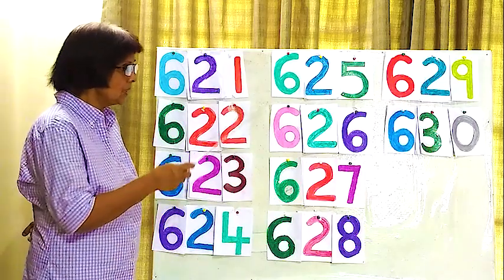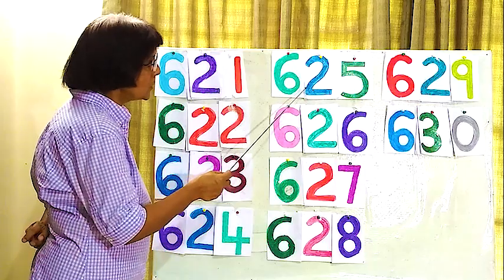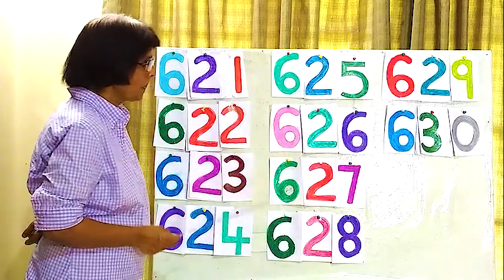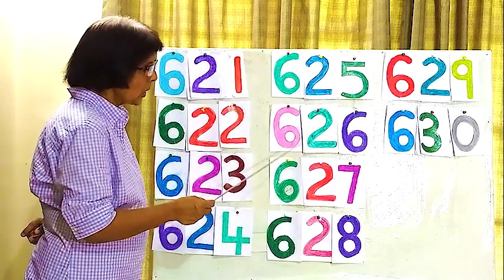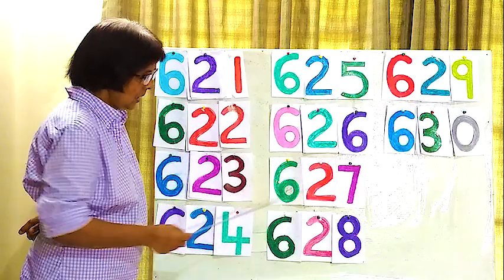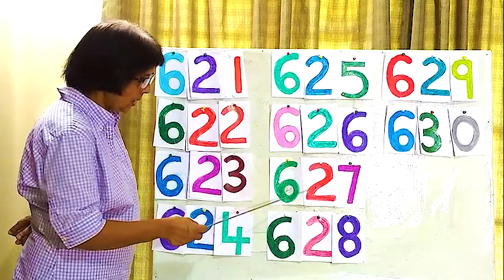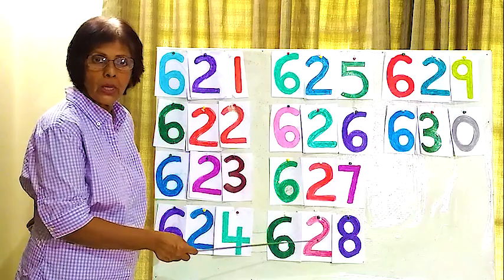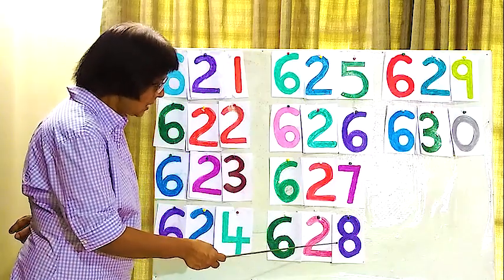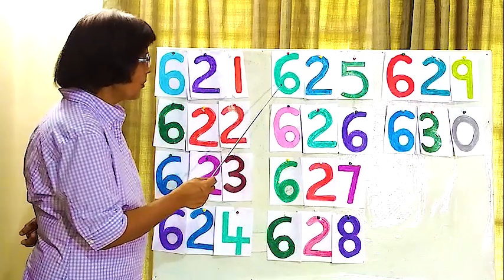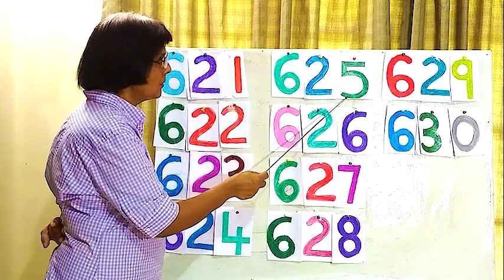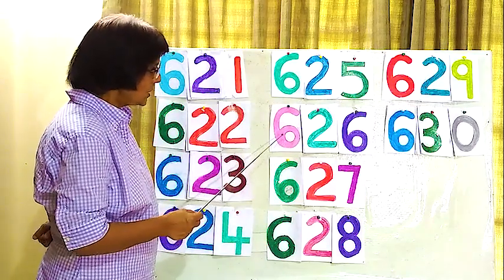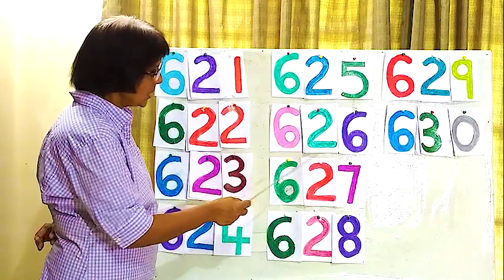We will go to this line here. 625, 626, 627, 628. 626, 627, 628, 626.